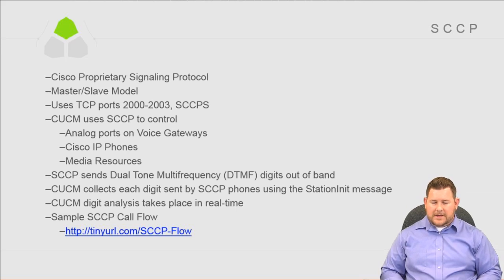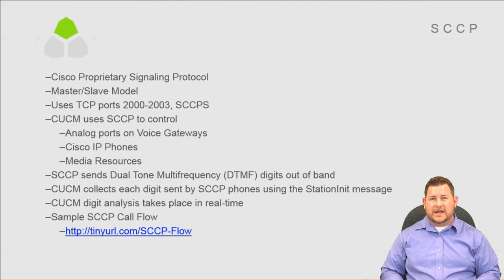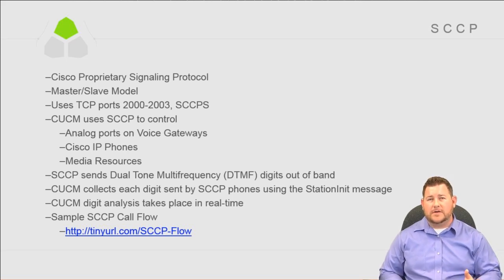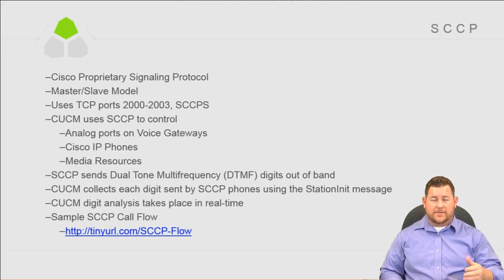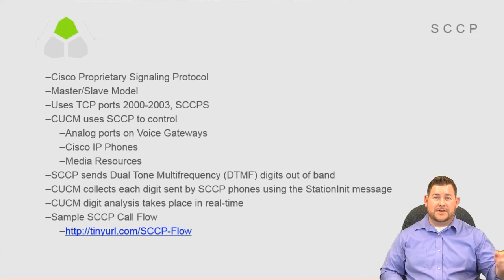CUCM collects digits sent by Skinny phones using the station init message. Digit analysis takes place in real time — if you go off hook on a Skinny phone and dial digits, those digits are sent immediately to Communications Manager one by one. So if you dial 1002, each digit is sent in sequence. The second you hit the last digit and Call Manager receives it, it routes the call immediately — as soon as it gets a match to a pattern somewhere in the system.